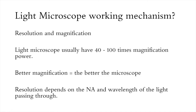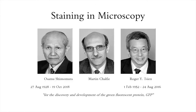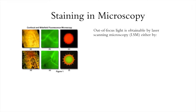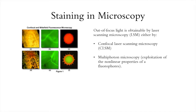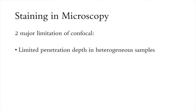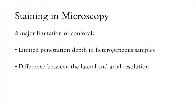In optical microscopy, GFP and its spectral variants are used for high-resolution visualization of protein localization patterns in living organisms. When GFP-labeled samples are viewed, optical sectioning — which is essential for the elimination of out-of-focus light — is obtainable through LSM, either by detection through a pinhole using confocal laser scanning microscopy, or using multiphoton microscopy to exploit non-linear properties of fluorophores. However, LSM suffers from two major limitations: limited penetration depth and differences between the lateral and axial resolution.